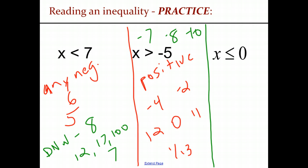And finally, for x is less than or equal to 0, everything that's true is negative, or 0, because 0 is less than or equal to 0. It's equal to itself, and everything that's false does not work, is positive.